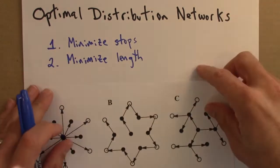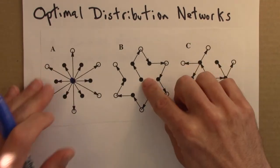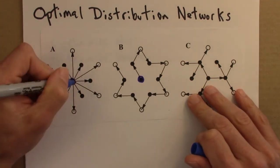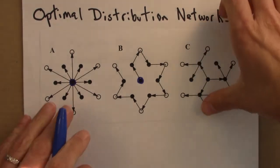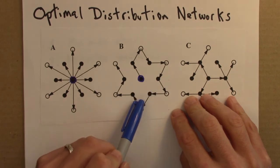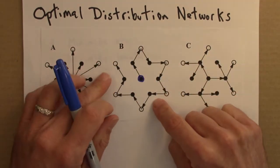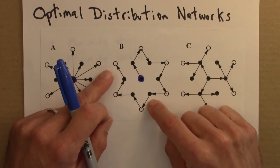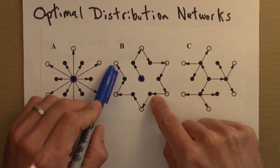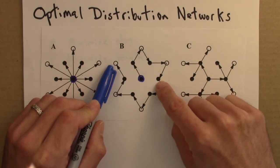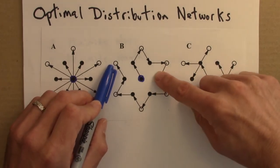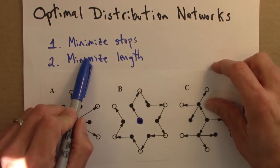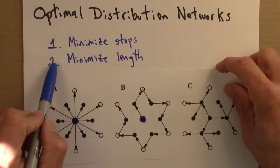What if we instead wanted to minimize the length of the pipes? Here is one possible minimal path: we're able to get water to all 12 houses with just 12 pipe segments. This is great if pipes are really expensive, but it's not so great — particularly for houses at the end of the line — because if there's a break somewhere in the chain, all the downstream houses lose water. So this solution optimizes length but actually maximizes the number of stops. We need some way to compromise between these two.